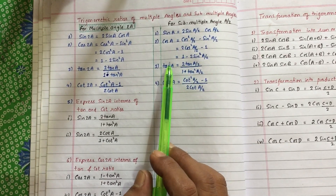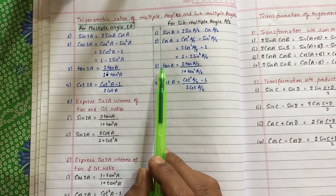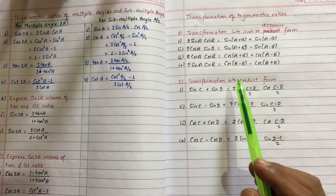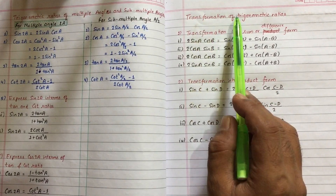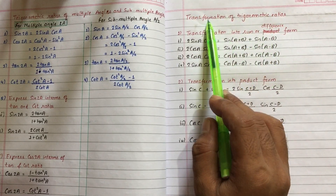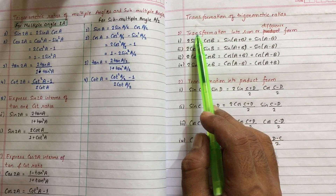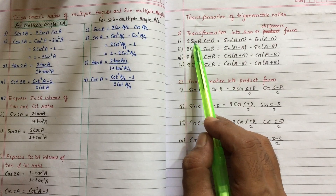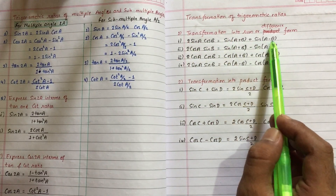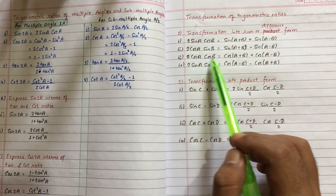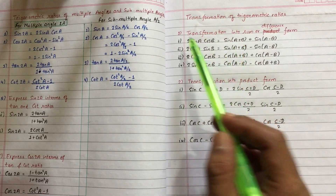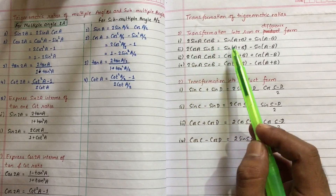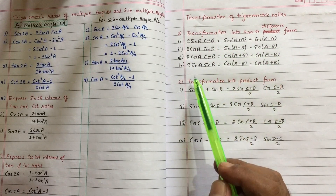This formula is very important before you start the exercise. We need these formulas. This is the third chapter — transformation of trigonometric ratios. Trigonometric ratios can be expressed using transformation formulas. This is the transformation into sum or difference form.